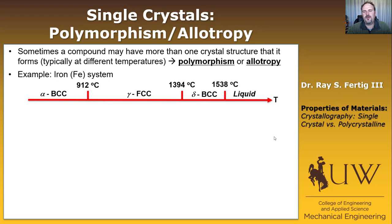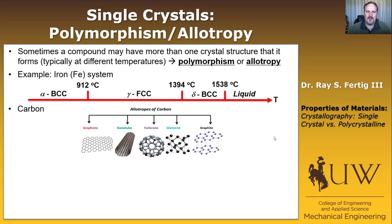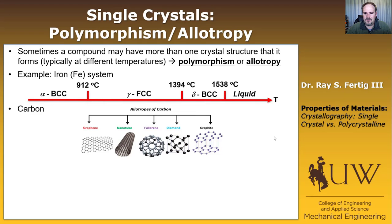Another classic example of a material with multiple possible structures is carbon. Carbon can form graphene — a hot new material because people are able to dope it to get very high electrical conductivities. It can also form nanotubes, fullerenes, diamond, and graphite. So those are five different structures that carbon can adopt — all allotropes of carbon.